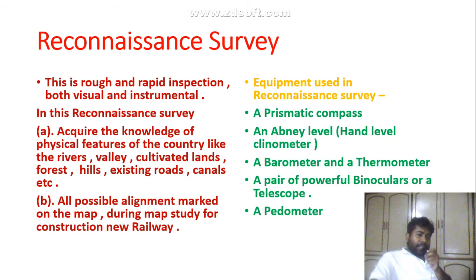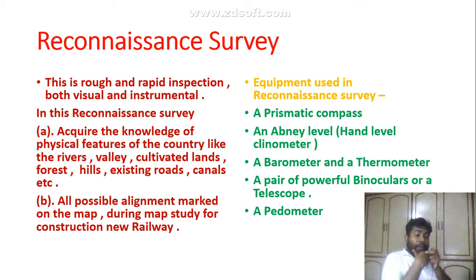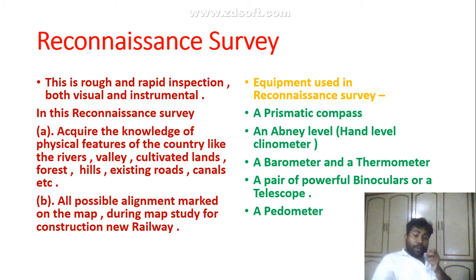Reconnaissance survey is a rough and rapid inspection, both visual and instrumental. In this survey, knowledge of physical features of the country is acquired — such as rivers, valleys, cultivated land, forest, hills, existing roads, canals, etc. All possible alignments are marked on the map during map study for construction. Equipment used in reconnaissance survey includes a prismatic compass, hand level or clinometer, barometer or thermometer, and a pair of powerful binoculars, telescope, or pedometer.